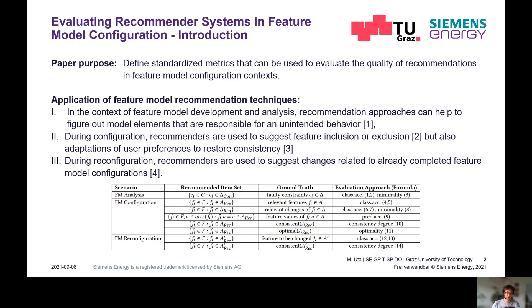We divided the feature model recommendation application into three different areas. The first is feature model analysis, where the recommendation helps to identify faulty constraints within the knowledge base and remove them — the main metric there is the classification accuracy of the identified conflicting constraints. The second area is recommendation during the configuration itself, the most popular one, where features are recommended to the user. There we identified several metrics relating to the relevance, consistency, and optimality of the feature model recommendation.